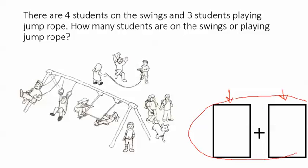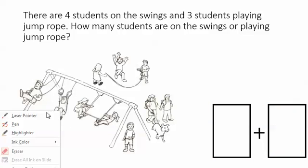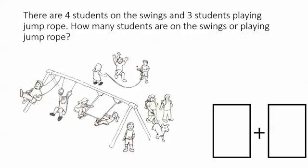Here we go: There are four students on the swings, three students playing jump rope. How many students are on the swings and playing jump rope? We could say four students on the swings, three students playing jump rope - that would be four plus three. But today we're going to fill it in as four and three circles.